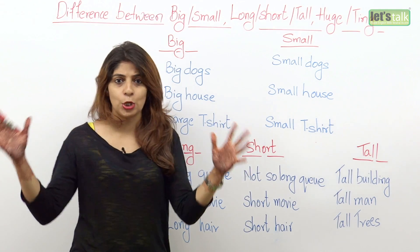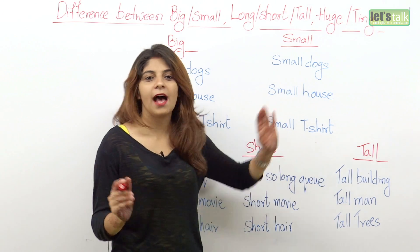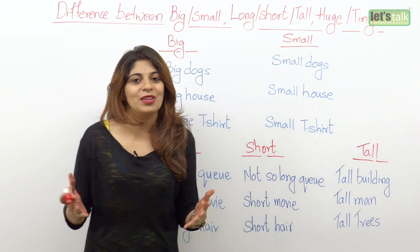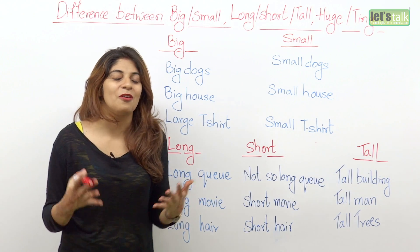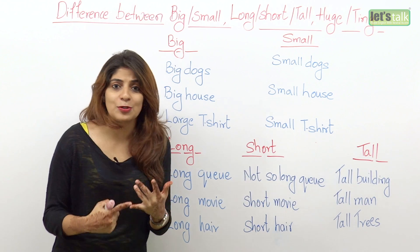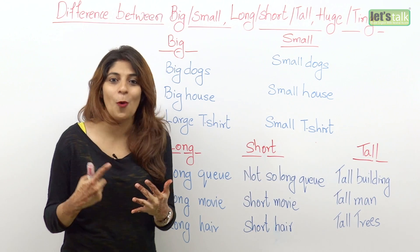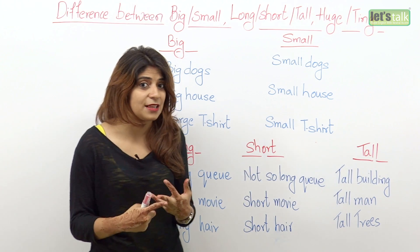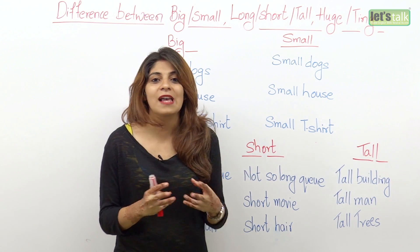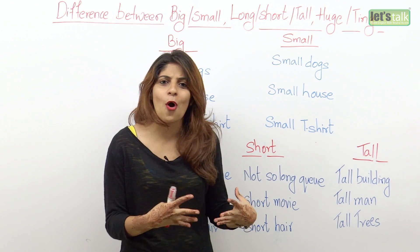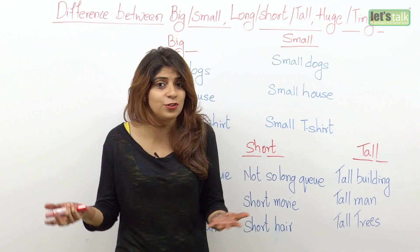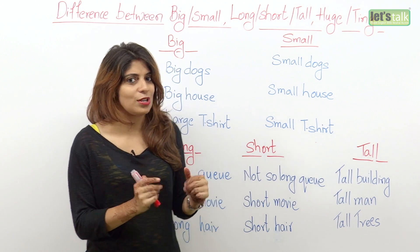Let's have a look at some examples. We have big dogs and small dogs. We all know there are different breeds of dogs. We have big dogs like Labradors, Golden Retrievers, or Mastiffs. On the other hand, we also have small dogs like a Shih Tzu, a Pug, or a Bichon.